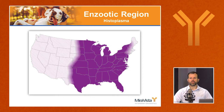Histoplasmosis is a worldwide infection. In the U.S., it's most common east of the Rocky Mountains, with considerable overlap with the enzootic region for blastomycosis. However, it can also be found in the western U.S., and is essentially enzootic in central California as well.